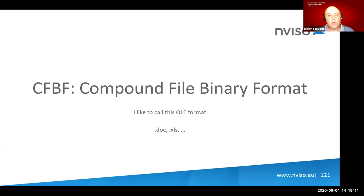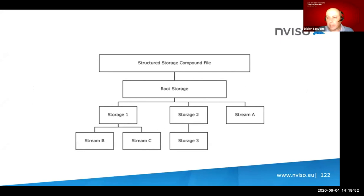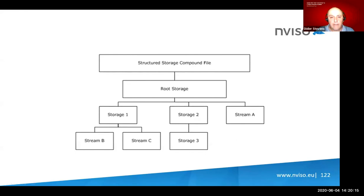The second major type is the Compound File Binary Format — the old format, introduced before Office 2007. Still very popular — that's the one with .doc and .xls. It's a binary file format with several names. I like to call it the OLE format because it's related to Object Linking and Embedding, which also explains the name of my tools like OLEdump. Importantly, this binary file format is a file system in itself, with a tree structure of storages (folders) and streams (files).